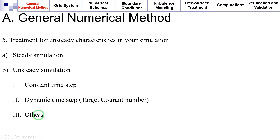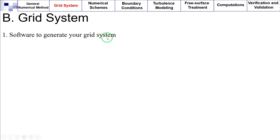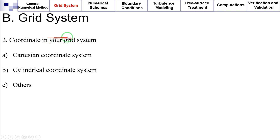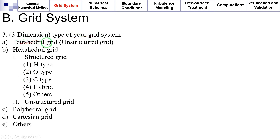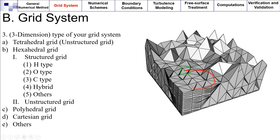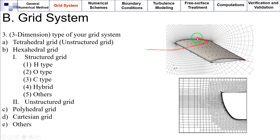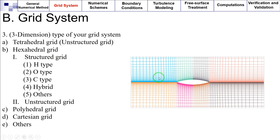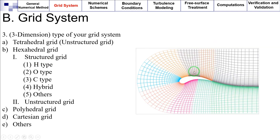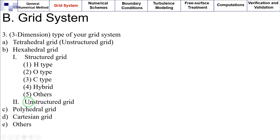Grid system: What is the software used to generate your grid system — for example, Star-CCM+? What coordinate system is used — Cartesian coordinate system, cylindrical coordinate system, or others? What is the type of your grid system: tetrahedral grid (unstructured), hexahedral grid (which can be structured or unstructured), structured grid (which can be H-type, O-type, C-type, hybrid, or others), polyhedral grid, Cartesian grid, or others which you need to specify?